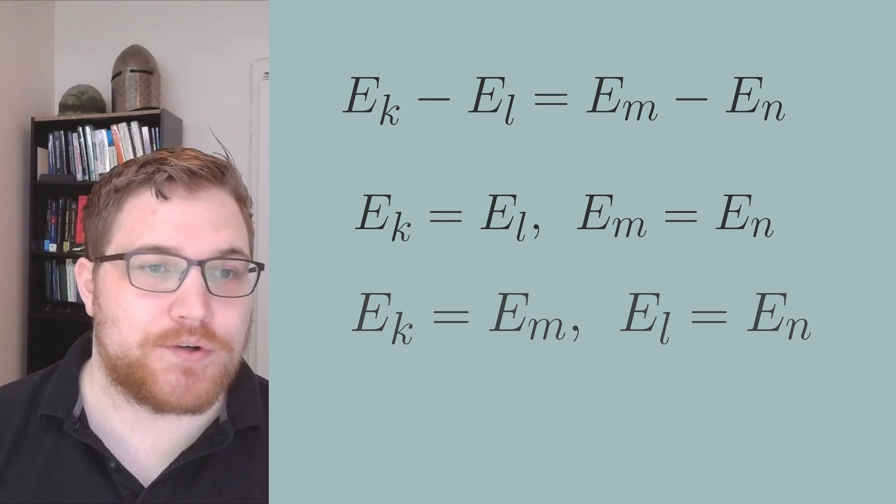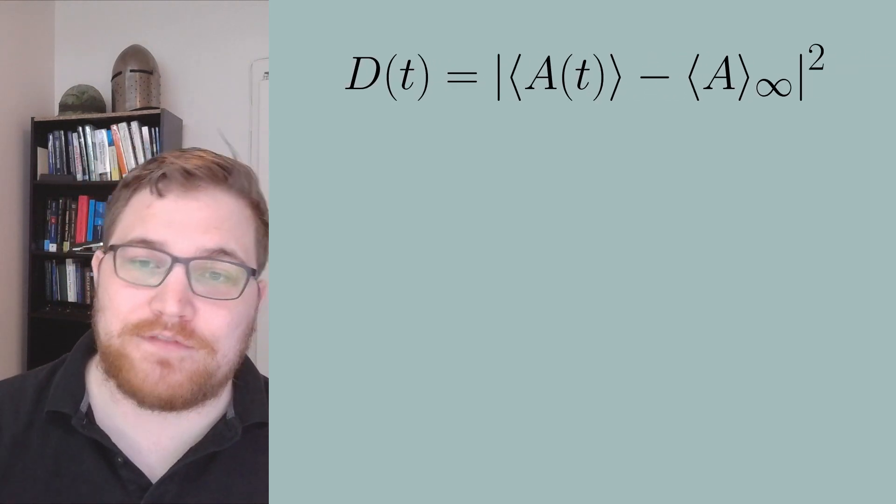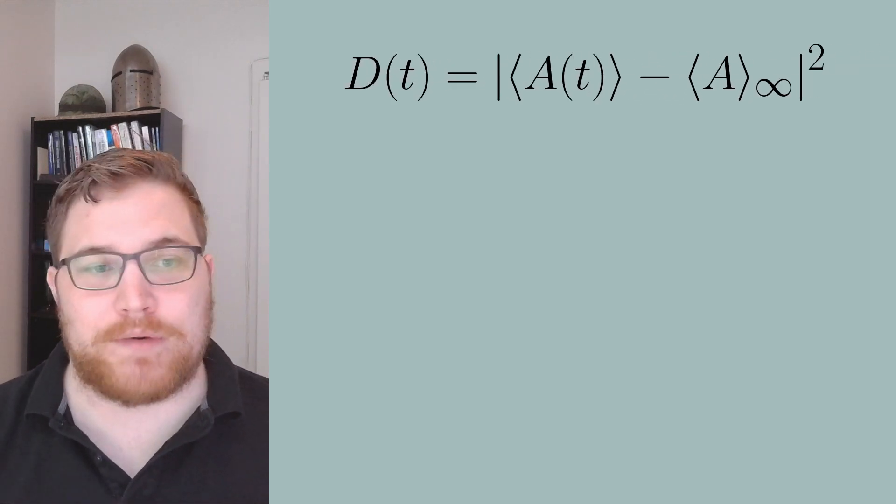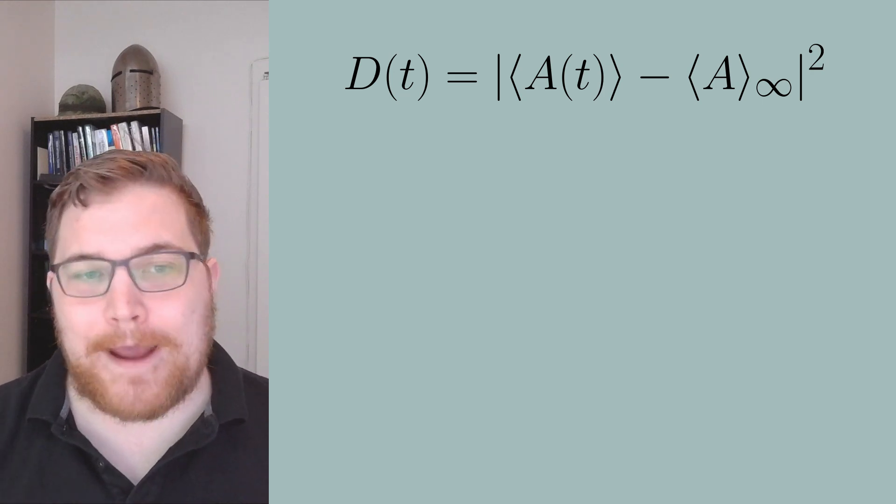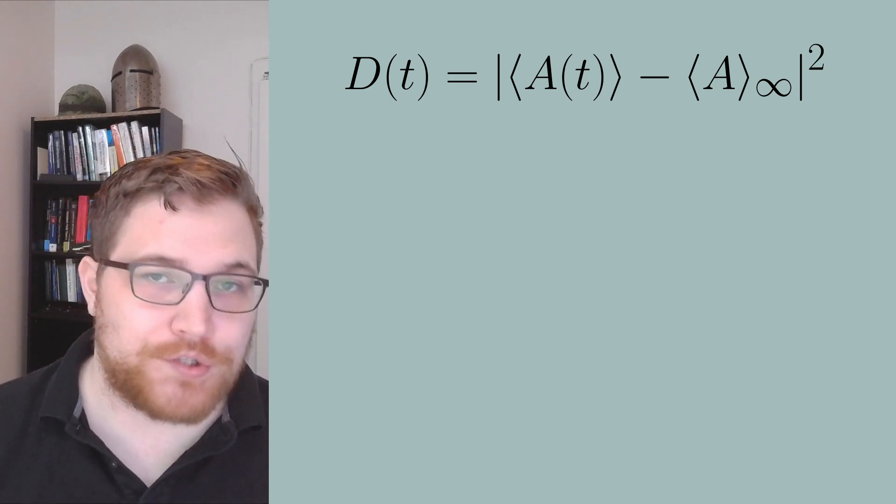The crucial result in these articles is an upper bound on our distance function in time, telling us on average how far our expectation value is from its equilibrium value. So restating it, the distance function we have, d of t, is the following expression. We want to know how big this is on average over all time.